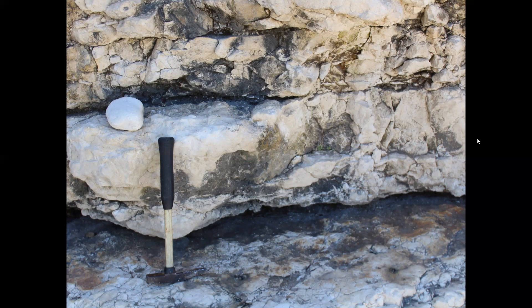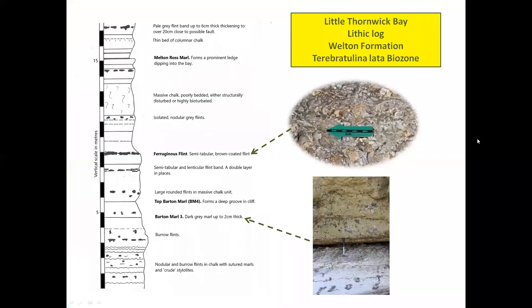The head of the hammer is resting on the bedding plane on the underside of the marl. Logging the chalk of Little Thornwick Bay produces a 17.5 metre section of the Welton formation, including four of the major marker bands, indicated here in bold print, that are used in correlating across Yorkshire and Lincolnshire. The effects of proximity to the deeper conditions of the late Cretaceous Cleveland Basin are demonstrated by comparisons of chalk thicknesses here with localities near Hull and in North Lincolnshire. The top Barton Marl and the ferruginous flint are 3.2 metres apart, whereas at Welton Wold west of Hull — the stratotype for the Welton formation — and at Melton Ross in North Lincolnshire, which are both on the East Midland Shelf, the gap is only 2.5 metres: a 38% difference in thickness.